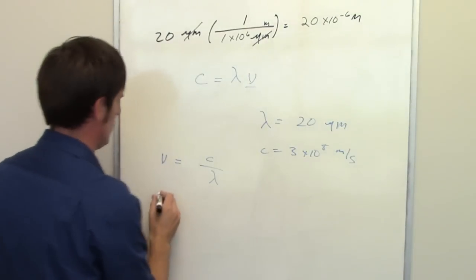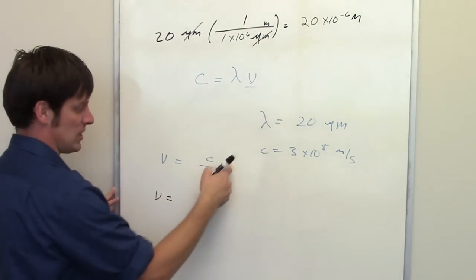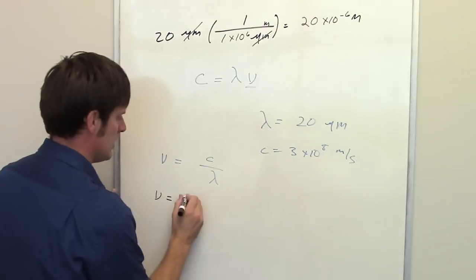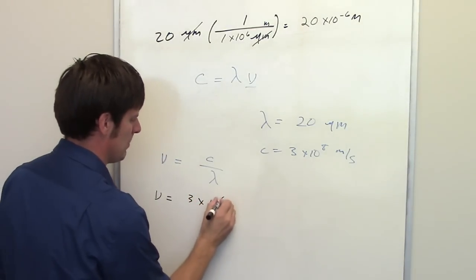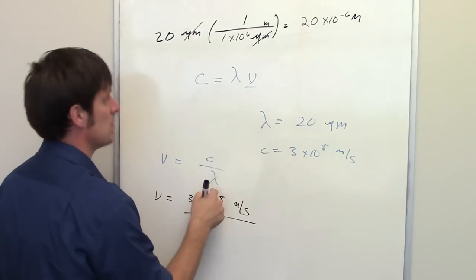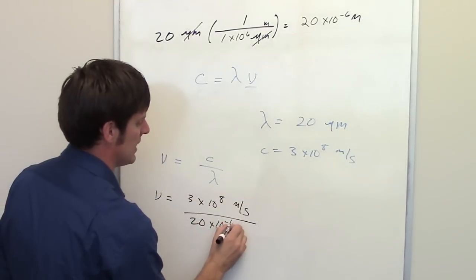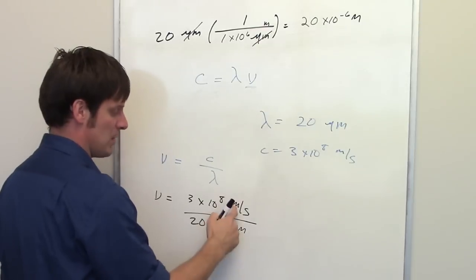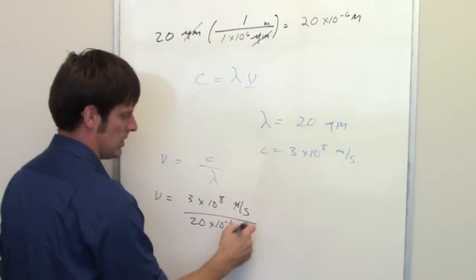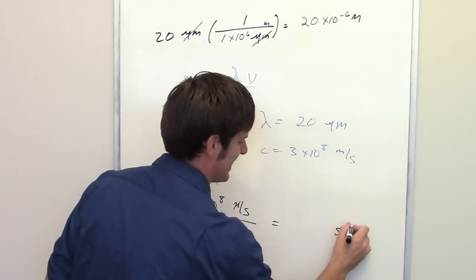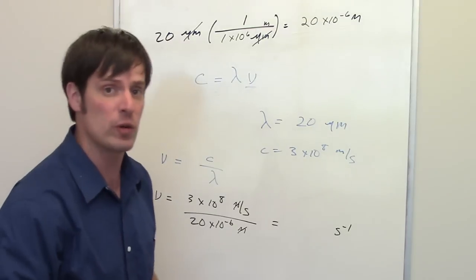Now I need to solve for my frequency. Frequency is once again equal to the speed of light divided by wavelength, which is 3 times 10 to the eighth meters per second, divided by my wavelength, which is 20 times 10 to the negative sixth meters. You'll notice that the meter units cancel each other out. And I end up with units of inverse seconds, which happen to be the units for frequency.